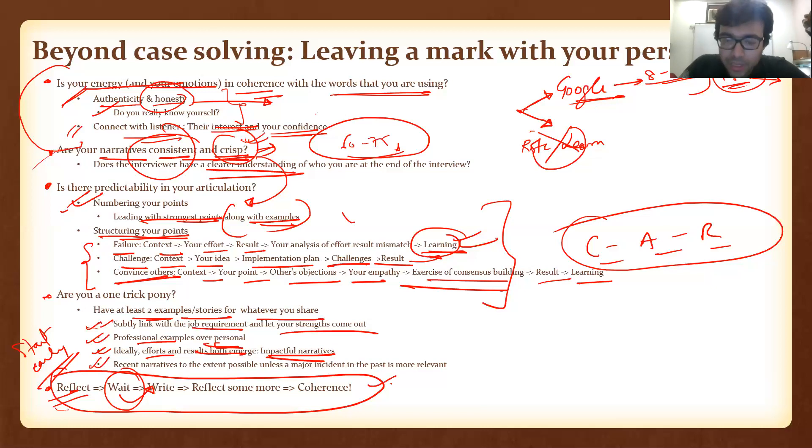Then write the key points down and then start reflecting more so that you bring in more coherence to the entire narrative. And then you are essentially sorted. The reflection process also here is to think of if you need more stories. But in the end, the coherence and the impact are what you are looking for.